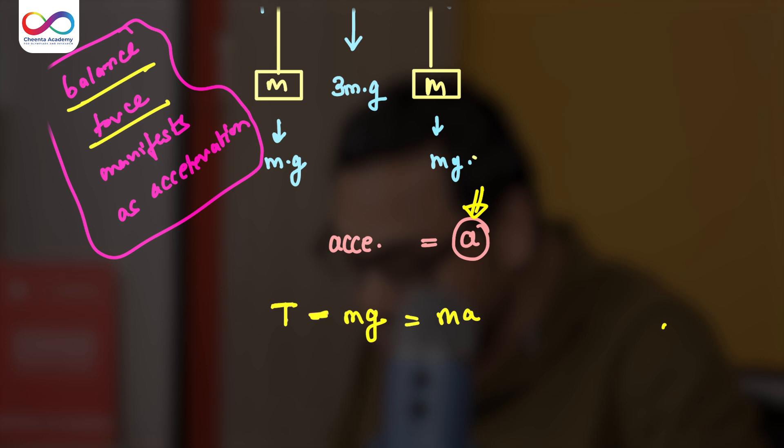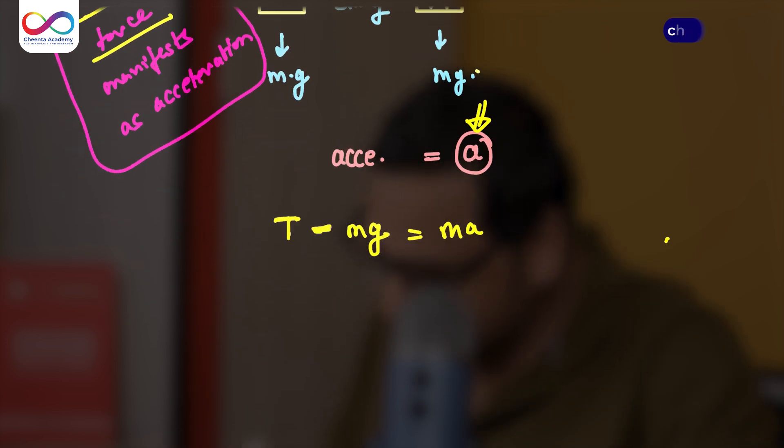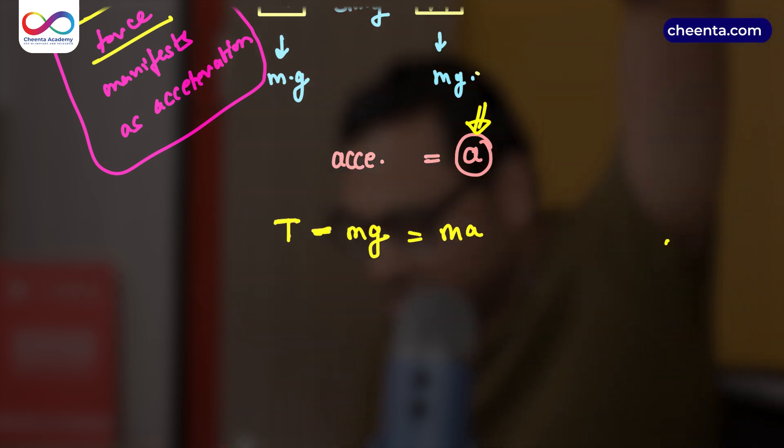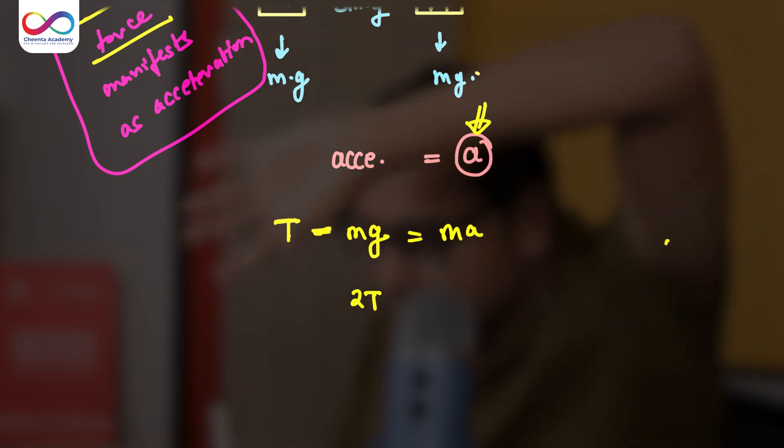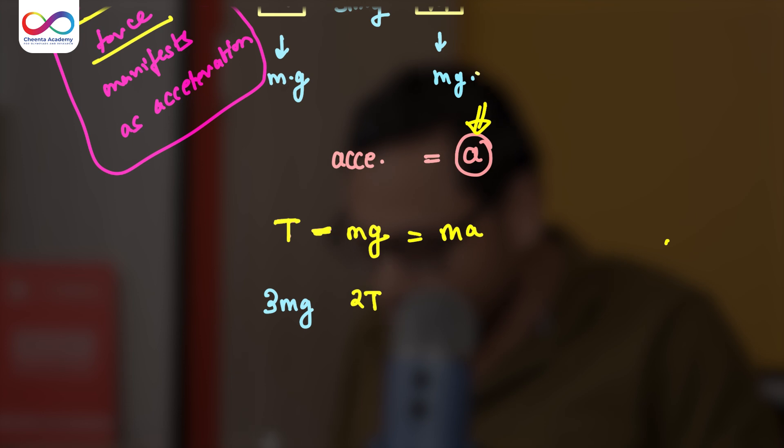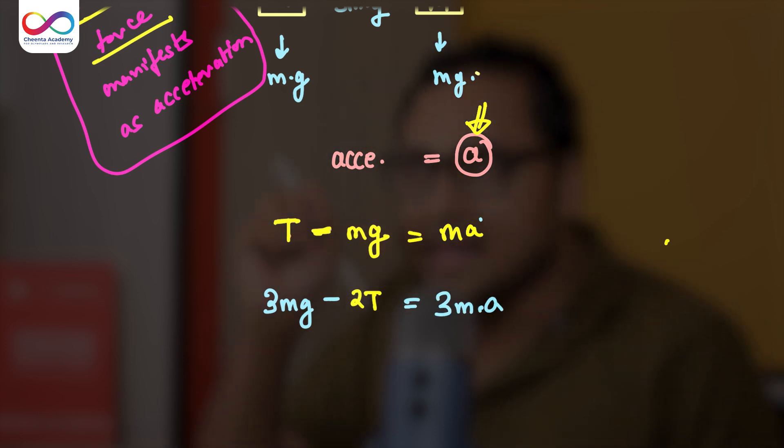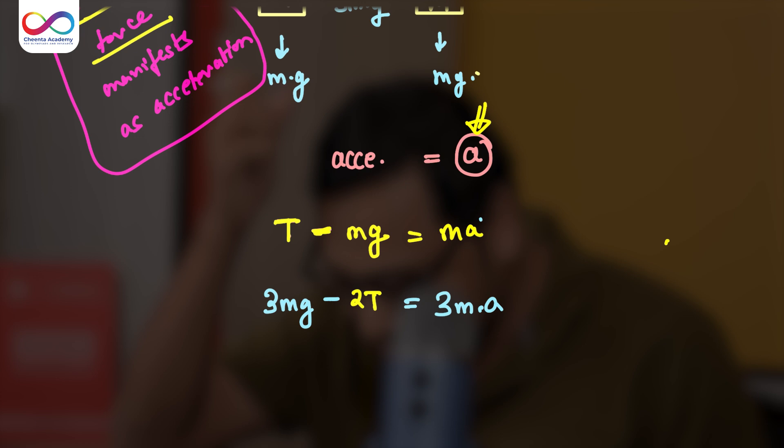The same thing is true about 3M. The force acting upward is 2T. The downward force is more dominant because it's falling downward. So 3Mg is a downward force. So the remaining force or the balance force is 3Mg minus 2T equals 3MA. The acceleration is the same but the force is different because the masses are different.